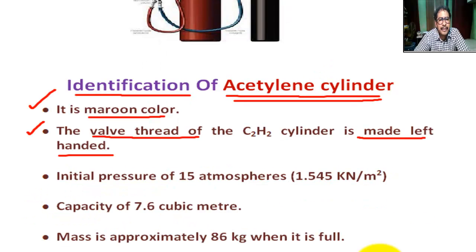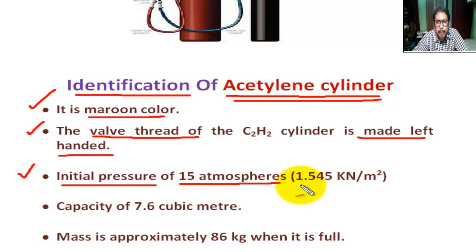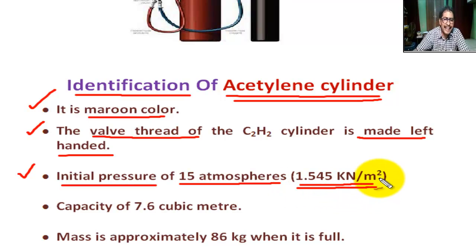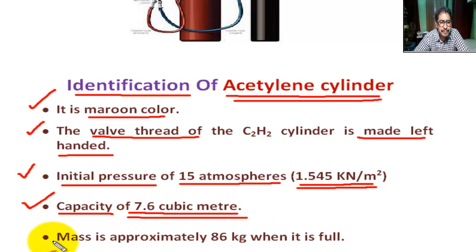The initial pressure of the acetylene cylinder is 15 atmospheres, that means 1.545 kilo newton per meter square. The capacity of the acetylene cylinder is 7.6 cubic meters.